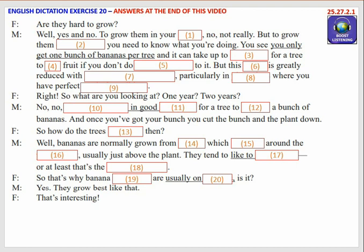Right. So what are you looking at? One year? Two years? No, no. Around 15 months in good conditions for a tree to produce a bunch of bananas. And once you've got your bunch, you cut the bunch and the plant down.